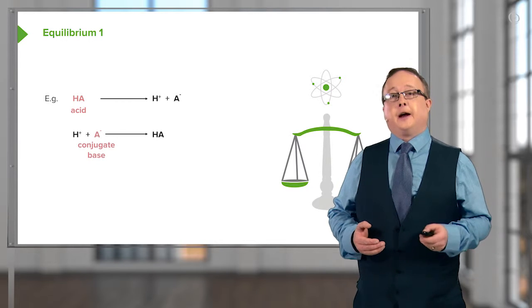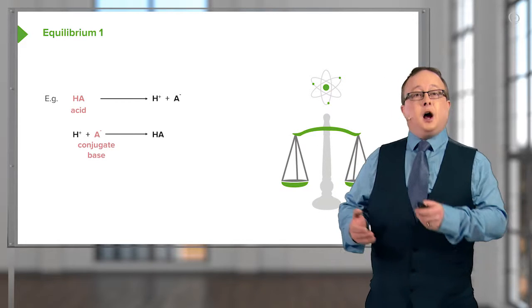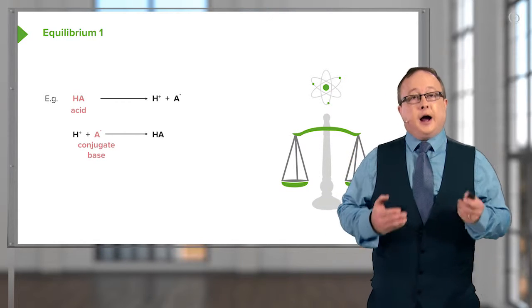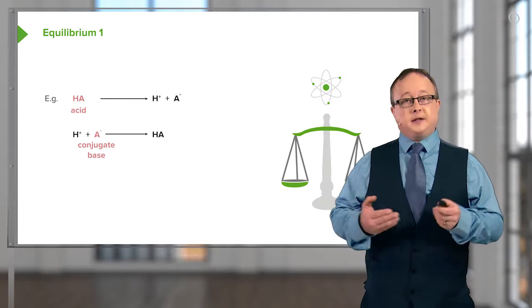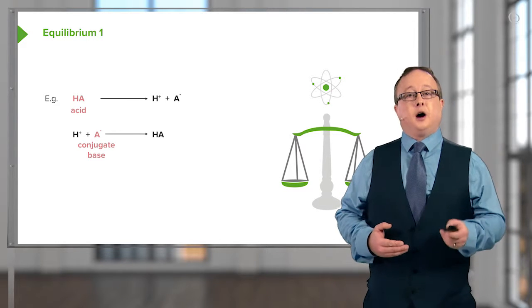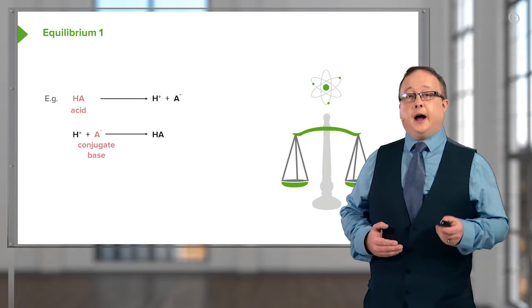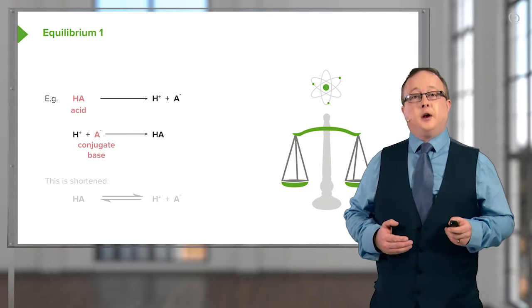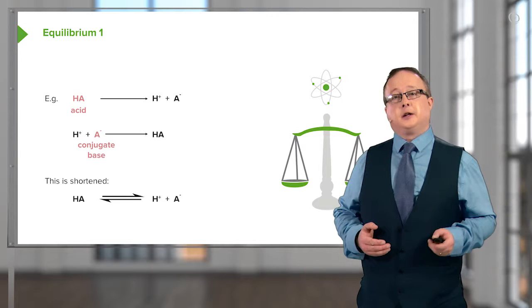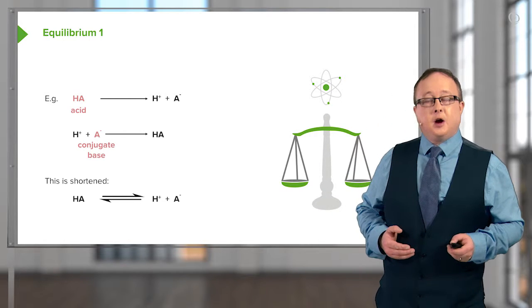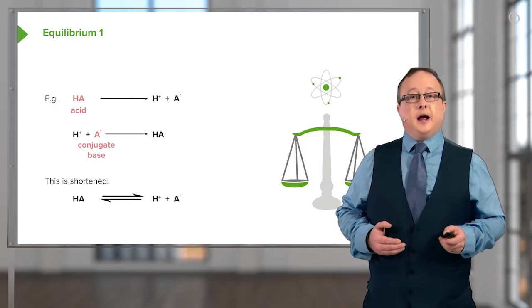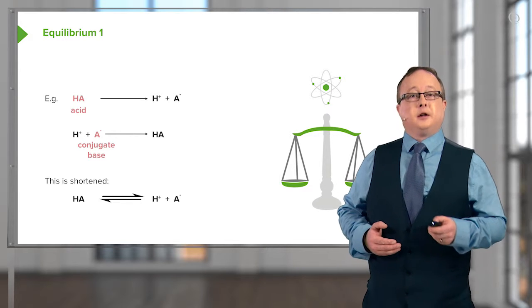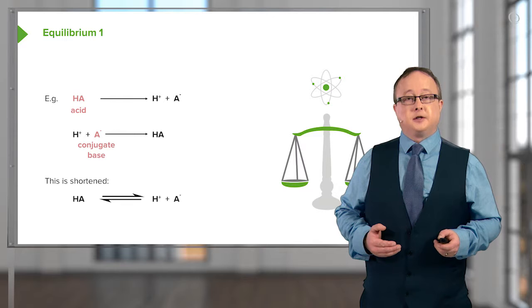But there can also be, in the case of weaker acids, a backward reaction where H-plus and A-minus come back together again to form our non-dissociated HA, which is our model acid. This equilibrium is shortened, as you can see at the bottom part of the board, where HA is shown to be in equilibrium with the H-plus and conjugate base A-minus.